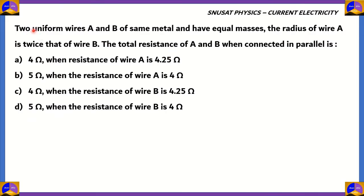Let's look at our first question. Two uniform wires A and B are of the same metal and have equal masses. The radius of wire A is twice that of wire B. The total resistance of A and B when connected in parallel is: 4 ohm when resistance of wire A is 4.25; 5 ohm when resistance of wire A is 4; 4 ohm when resistance of wire B is 4.25; 5 ohm when resistance of wire B is 4 ohm.